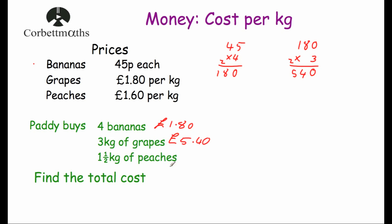For one and a half kilograms of peaches: one kilogram costs £1.60, or 160 pence. Half a kilogram would be 80 pence — that's half of 160. Adding 160 and 80: zero plus zero is zero; six plus eight is 14, put the four down, carry the one; one plus one is two. So one and a half kilograms of peaches costs £2.40.